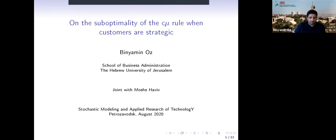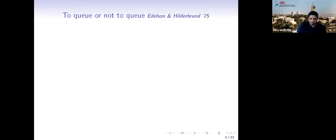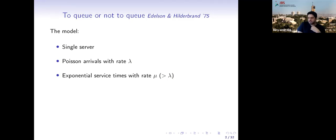I will start from the very beginning, assuming almost no previous knowledge. I'll start with a very basic model for strategic queuing, the one presented by Edelson and Heidelband in 1975. The basic question is: to queue or not to queue. We have a single server, an incoming Poisson arrival process with rate λ, and exponential service with parameter μ.